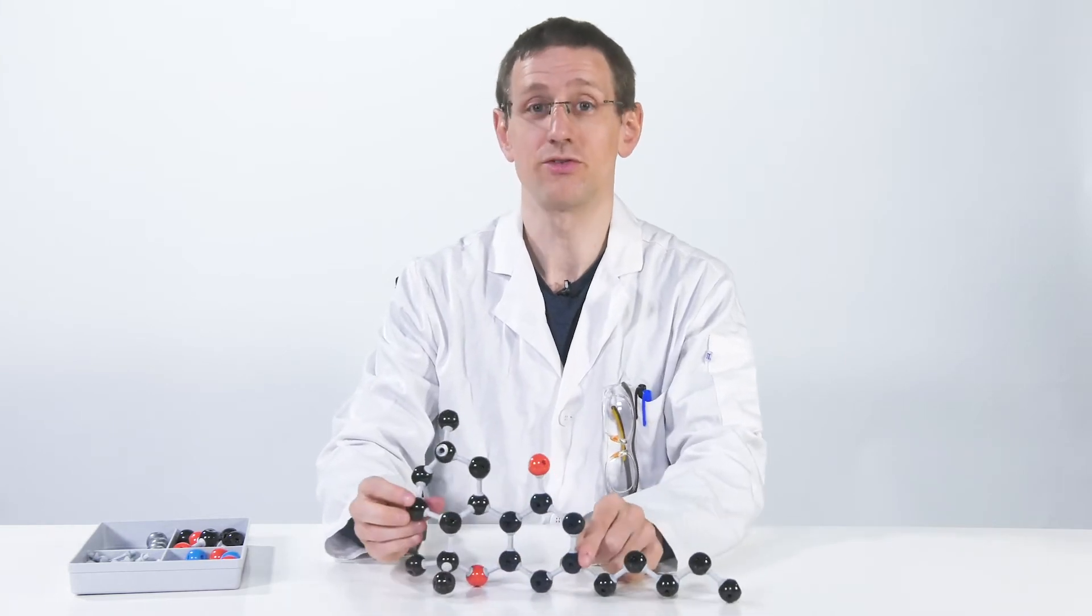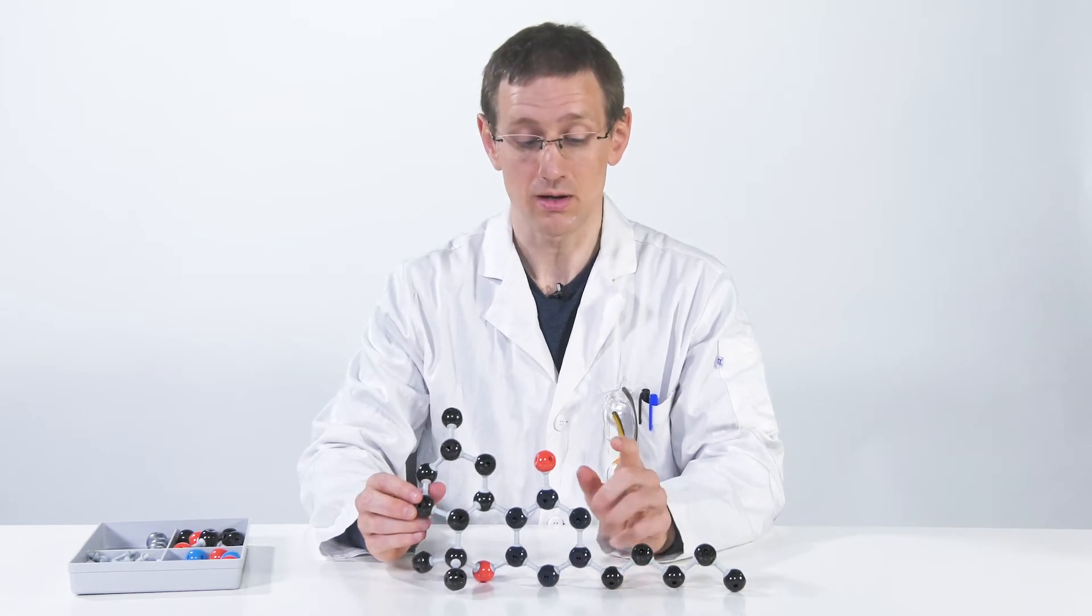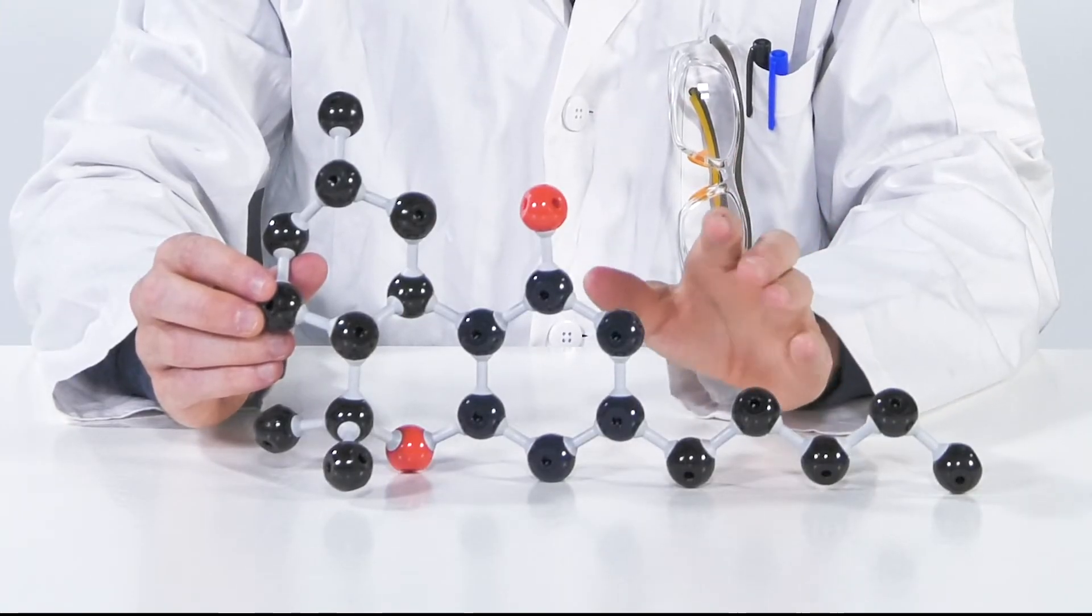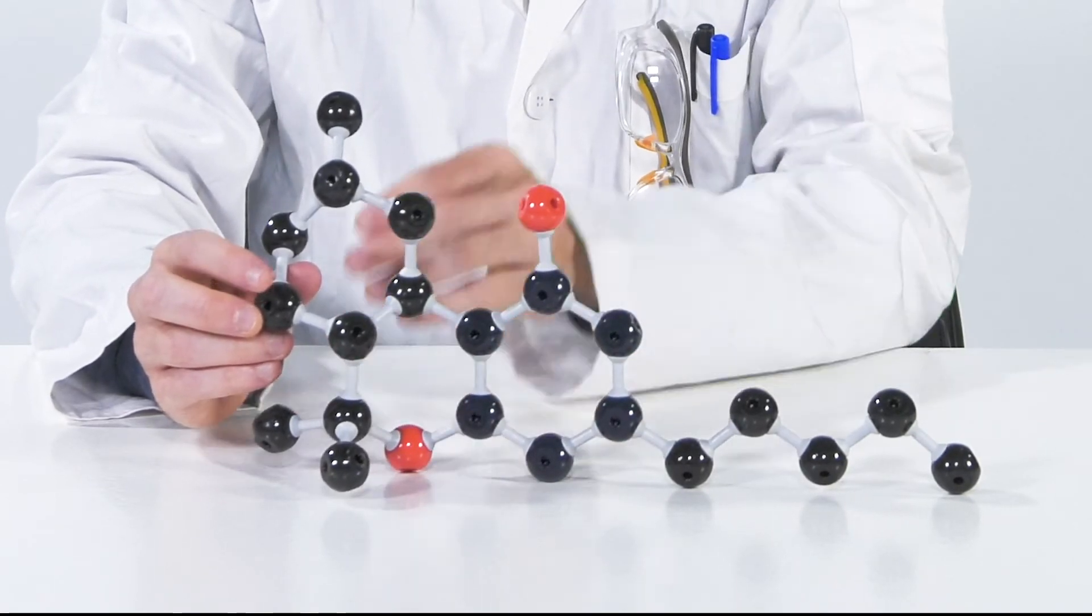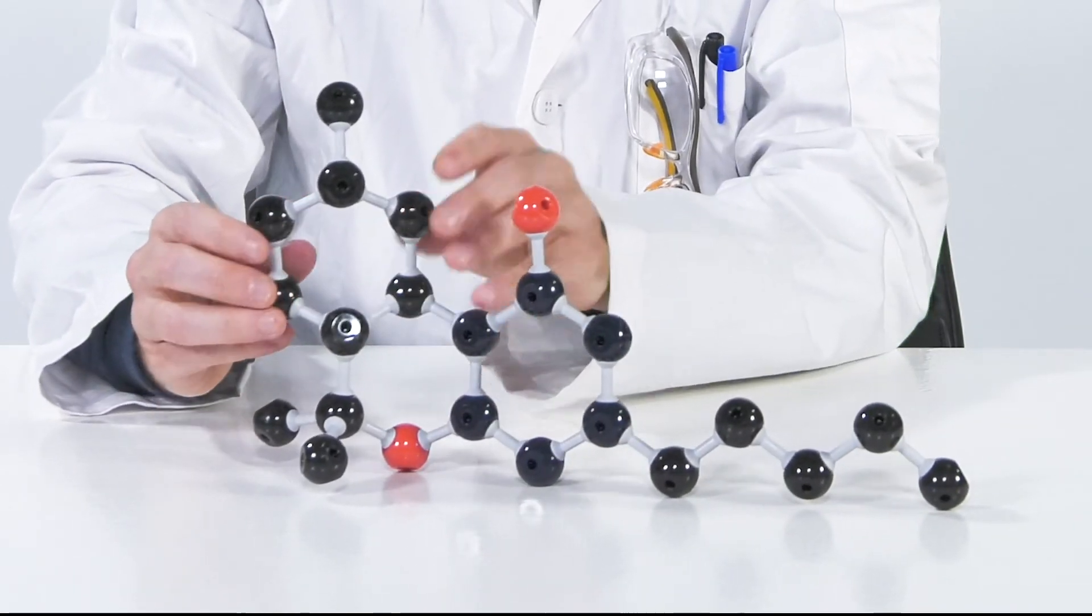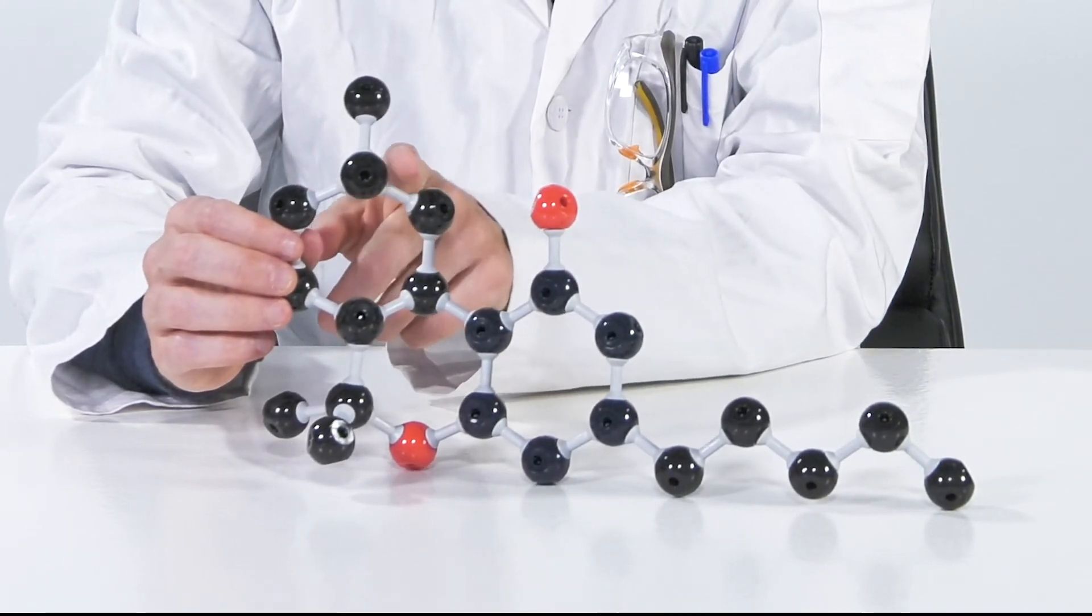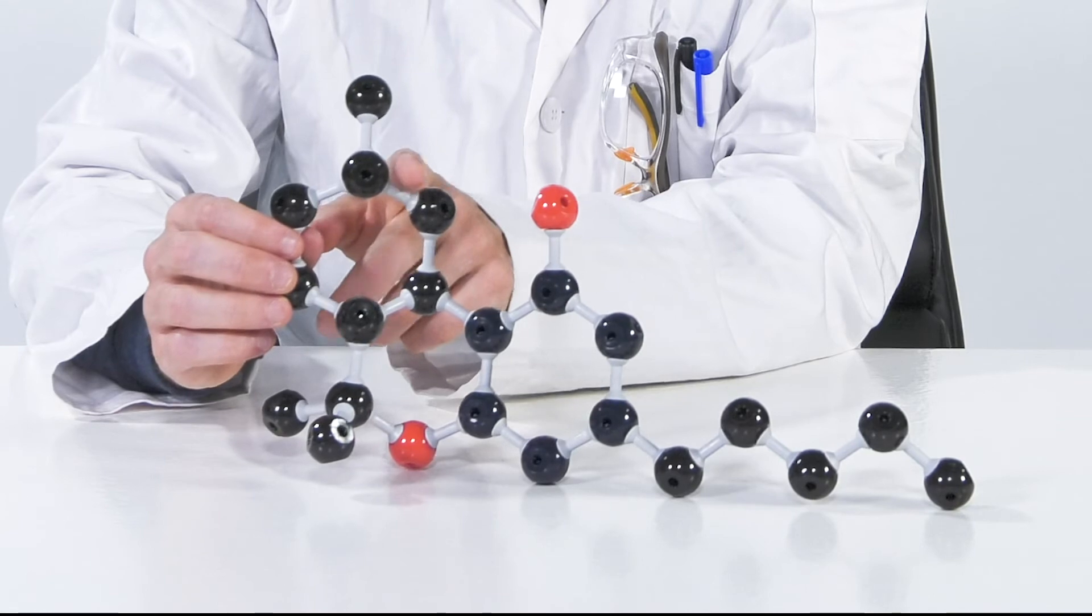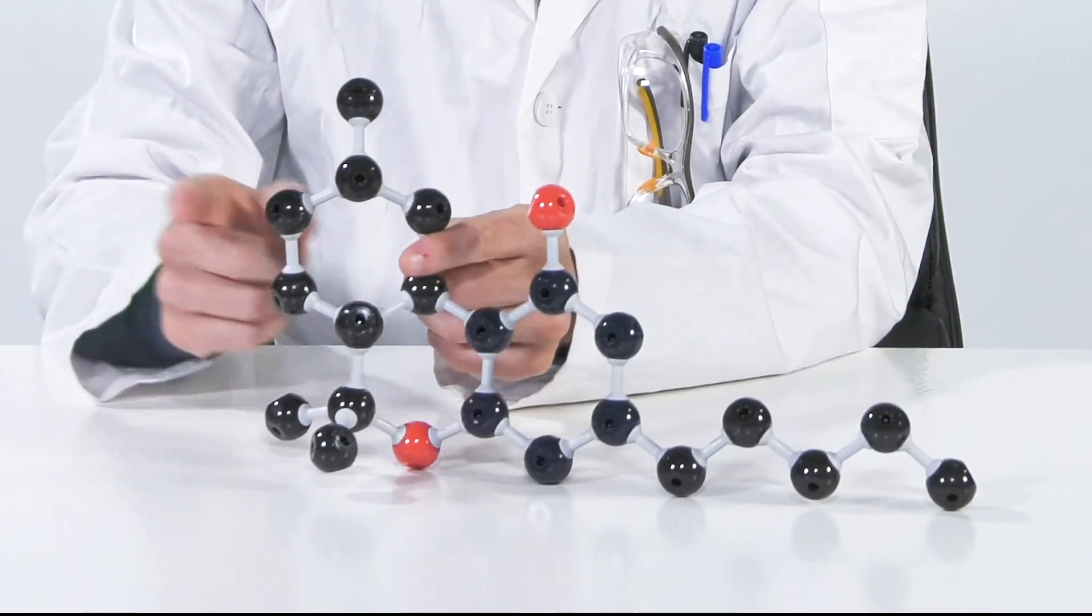So this is THC. Let me tell you a few more things about it. If as a chemist we want to talk about it, we would talk a benzene moiety, a pyran moiety, and then the cyclohexene unit up here, where the double bond is positioned here. So that's why it's delta-9 THC. If the double bond would be on this side, it would be delta-8, delta-10, delta-7, and so on.